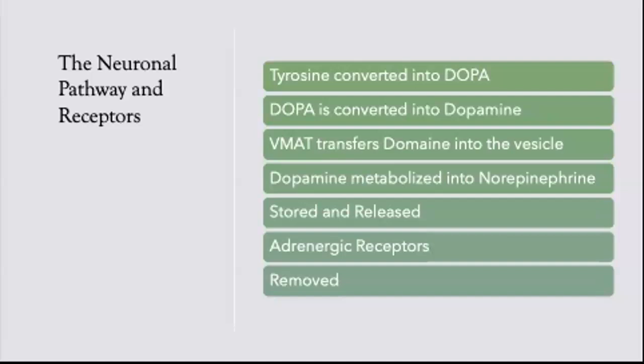It's almost like a recycling program. The receptor releases it into the synaptic cleft, it gets back into the cytoplasm via the norepinephrine transporter (NET), and then the VMAT recycles it back into the vesicle. Three things can occur to remove norepinephrine: it can diffuse away from the synaptic cleft into the bloodstream, it can be brought back into the cytoplasm by the NET, or it can be broken down by enzymes into inactive metabolites — most likely by monoamine oxidase.